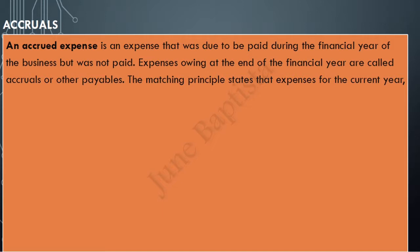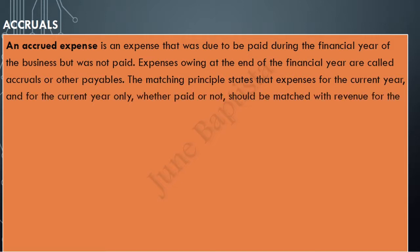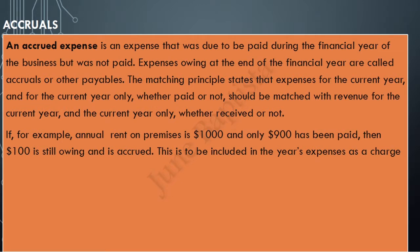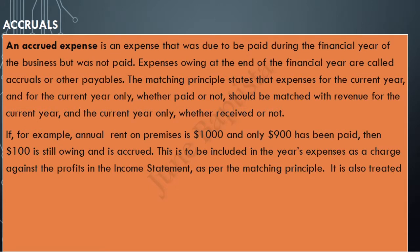The matching principle or concept states that expenses for the current year, and for the current year only, whether paid or not, should be matched with revenue for the current year only, whether received or not. For example, if annual rent on the business's premises is $1,000 and only $900 has been paid, then $100 is still owing and is therefore accrued. This $100 has to be included in the year's expenses as a charge against the profits in the income statement as per the matching principle. It is also treated as a current liability in the statement of financial position.